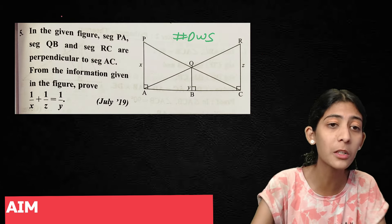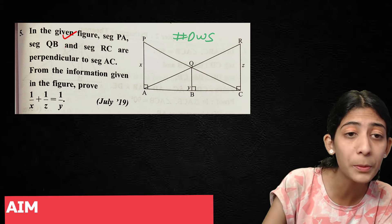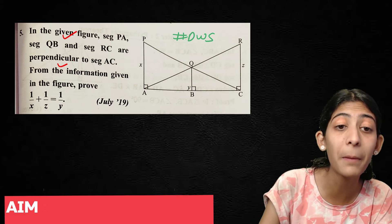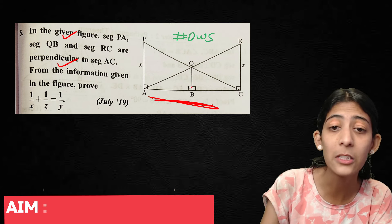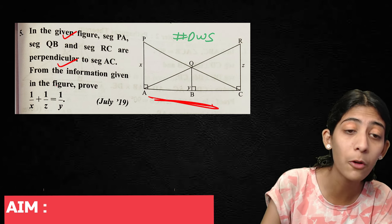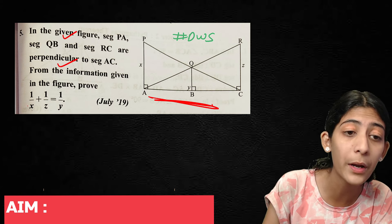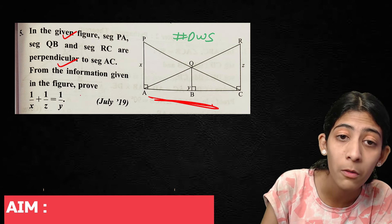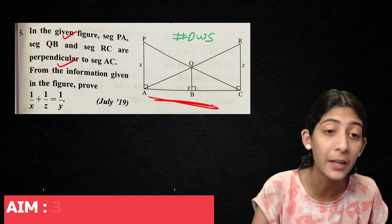Chapter 2, first question: In the given figure, segments TA, QB, and RC are perpendicular to segment AC. Given the information in the figure, prove that 1/x + 1/z = 1/y.